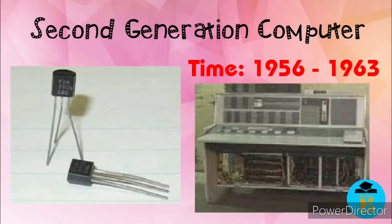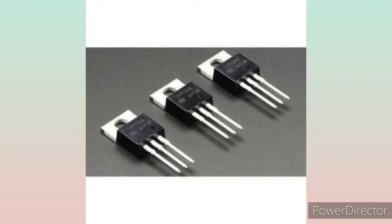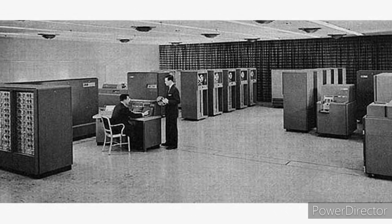Second generation computers: the time period was from 1956 to 1963. In second generation computers, vacuum tubes were replaced by transistors. These transistors were smaller in size, faster, cheaper and more reliable. The size of the transistors was smaller than the vacuum tubes, but they were faster and cheaper. They consumed less electricity and generated less heat compared to first generation computers. High-level languages developed during second generation computers were COBOL and BASIC. Examples of second generation computers are IBM 700 and IBM 1400.